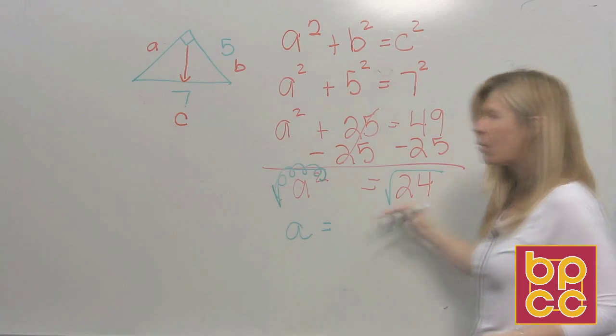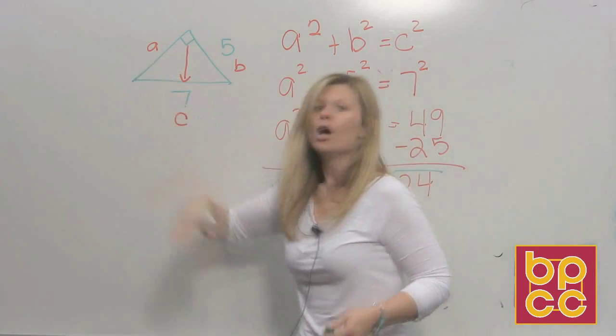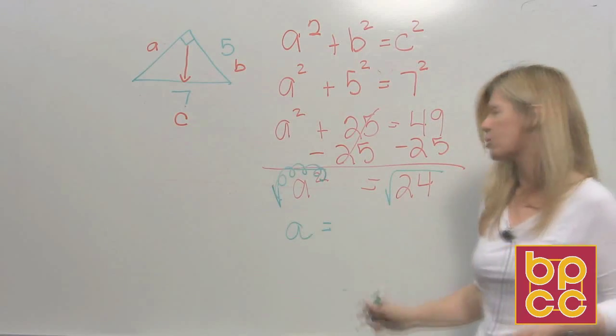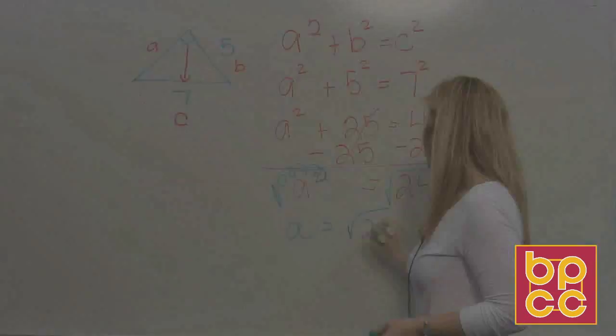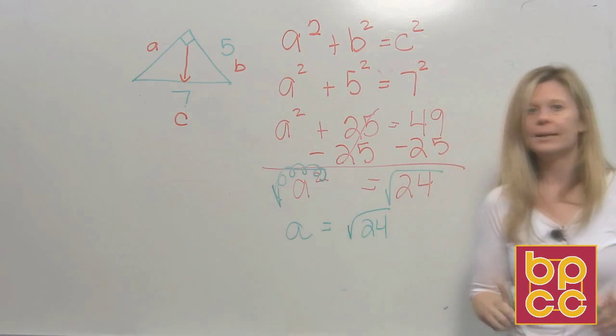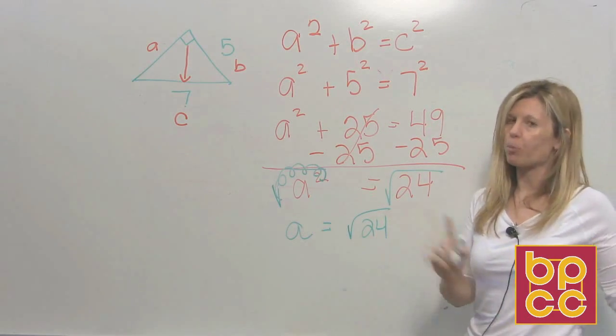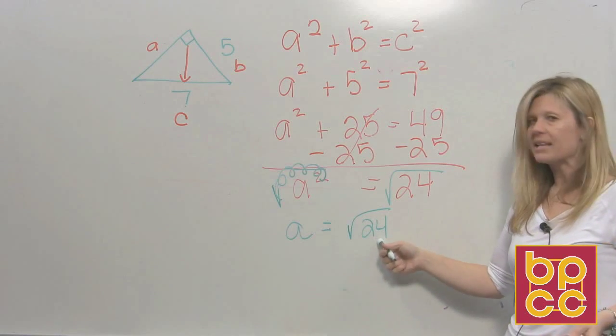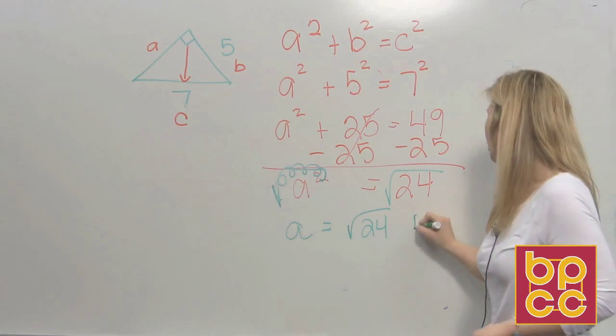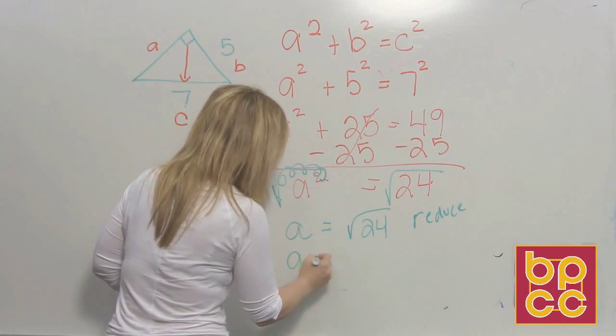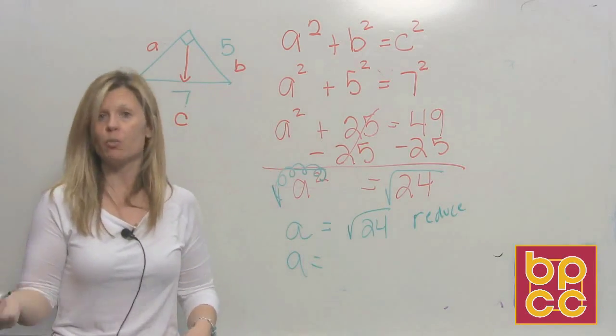Because we're doing Pythagorean theorem and we're finding a missing side, we know this answer is going to be positive. That is why we're not putting the plus or minus. So we have a square root of 24. Now you have to read your directions carefully. As you all know from previous modules, any number that's in a square root has to be reduced.